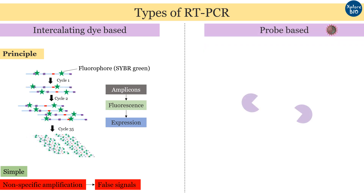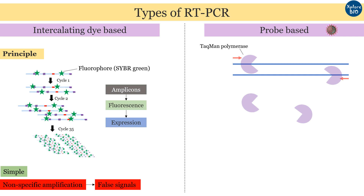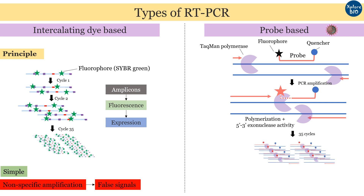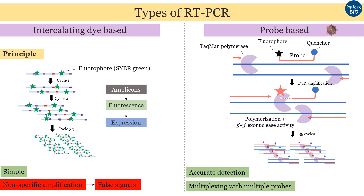The second RT-PCR type is fluorescent probe-based, which produces much more specific and reliable results. This type is most popular for COVID-19 detection. It utilizes TaqMan probes containing a fluorophore and a quencher molecule in close proximity. During PCR amplification, Taq polymerase makes a new copy of the complementary DNA target. As it reaches the probe, it cleaves and frees the fluorophore from the quencher with its 5' to 3' exonuclease activity. During successive PCR cycles, more and more probes release the fluorophore, producing a detectable fluorescent signal. Multiple probes labeled with different fluorophore molecules can be multiplexed together, making it easier to perform multiplex PCR for multiple targets.